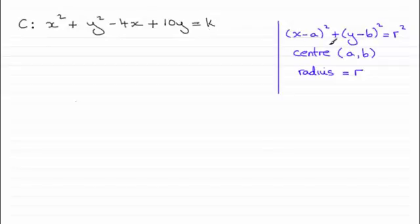Well just as a reminder, if you have an equation of a circle in this format here, then the centre has coordinates a, b and r is the radius. So what we need to do is make this equation have this form here.